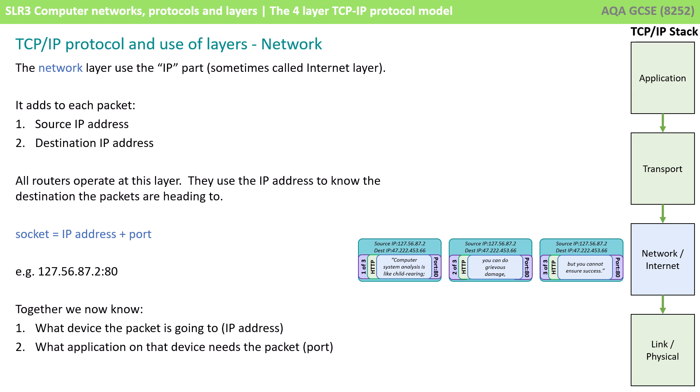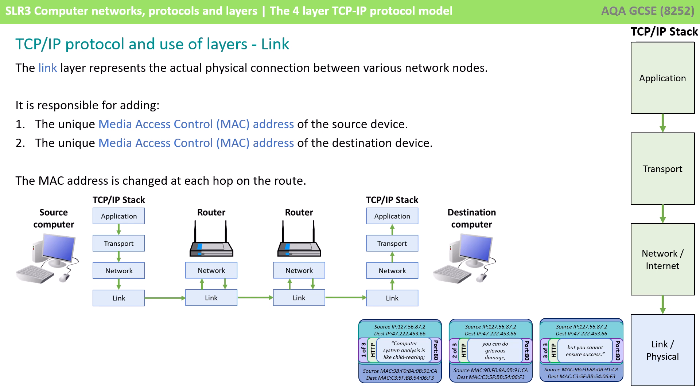All routers operate on this layer. The destination IP address gets added to a port and together they create a socket. Together they let us know what device the packet is going to — the IP — and what application on that device needs the packet — the port. Finally, we pass down to the link layer, sometimes called the physical layer. It's the lowest layer of the model and represents the actual physical connection between the various nodes. This layer is responsible for adding the MAC address — it adds a source MAC address and a destination MAC address, and again wraps this information around everything else.